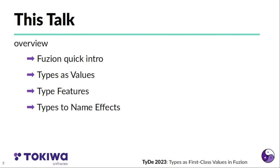I have four parts in my talk. I assume none of you know about the Fuzion language. I'll start with a quick intro into the motivation and basic concepts. Then I'll focus on different aspects related to types, how types are used as values. I'll introduce something I call type features. And in the end, I want to show how types are used to distinguish, to reference effects.